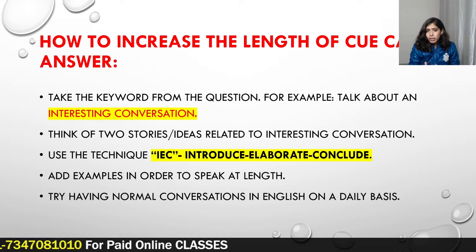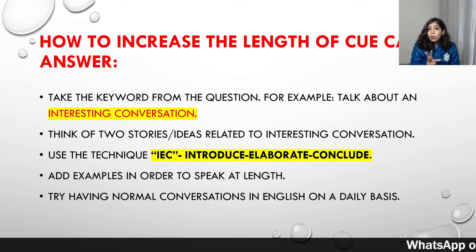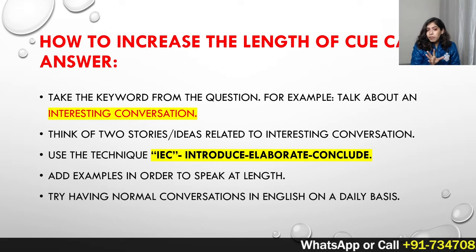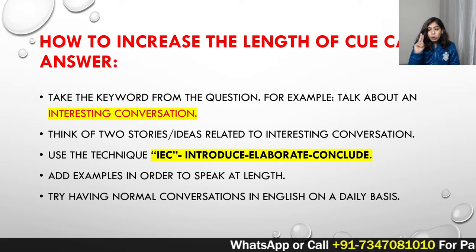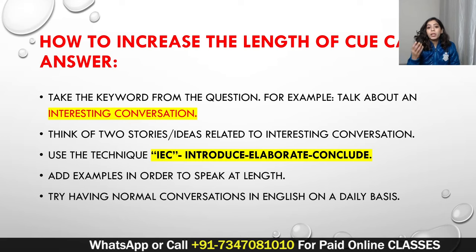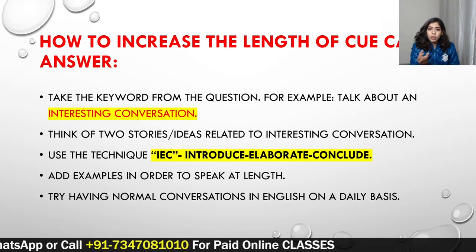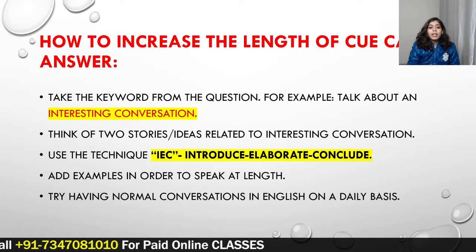So what do you want to do in each cue card? The keyword is usually a noun or an adjective. For example, 'interesting conversation' is the keyword. Think of 2 stories related to that keyword. Just try to recall two incidents where you had an interesting conversation with one person or another. Then use the IEC technique.